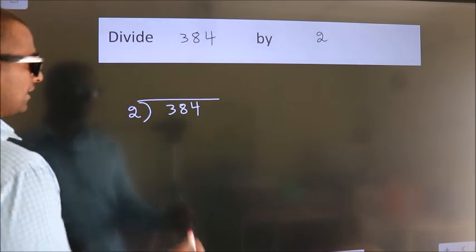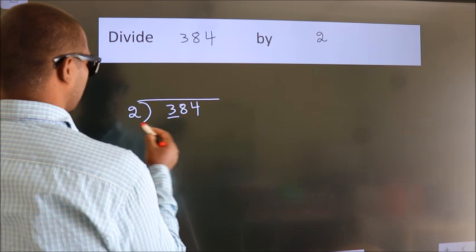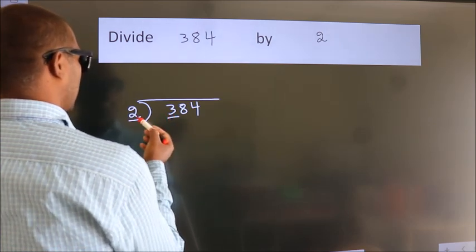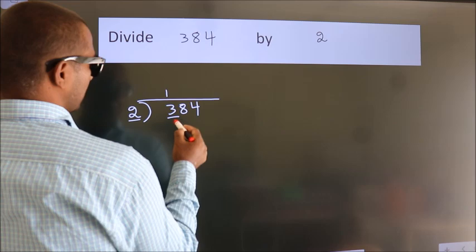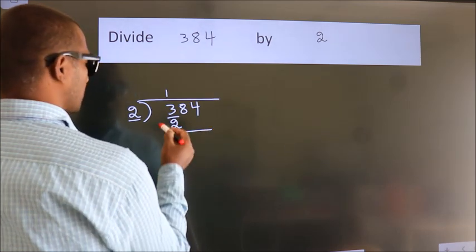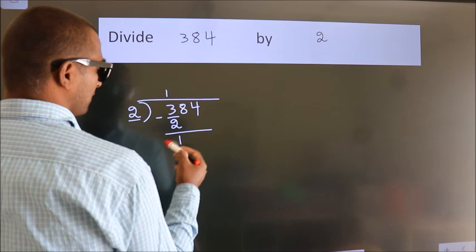Next, here we have 3, here 2. A number close to 3 in 2 table is 2 1s, 2. Now, we should subtract. We get 1.